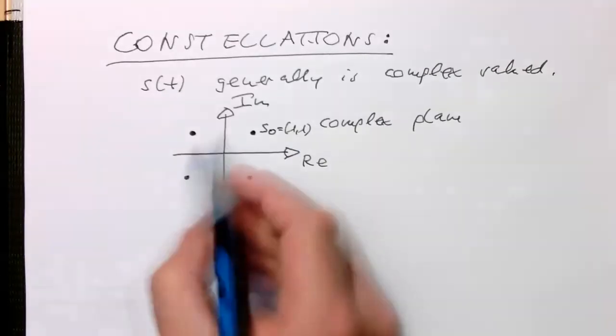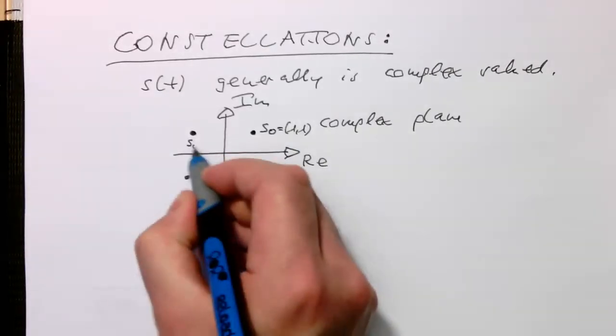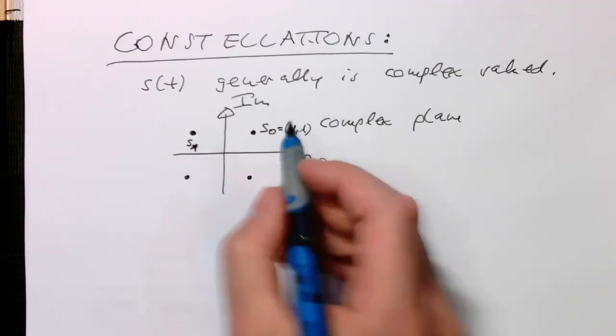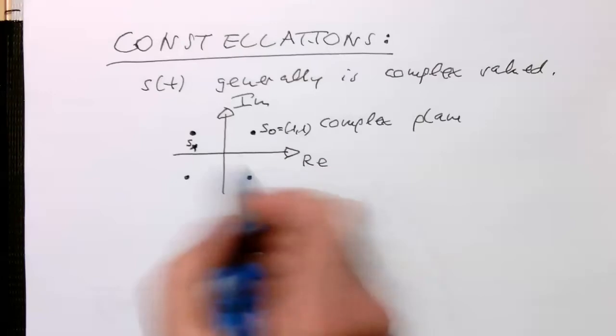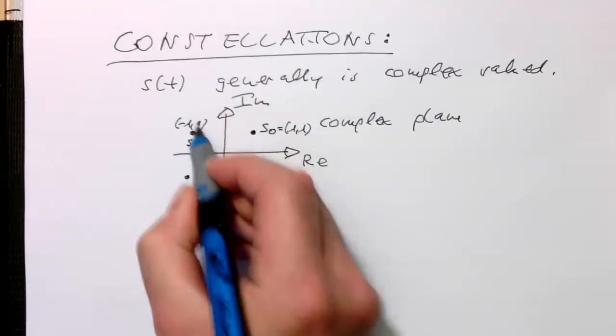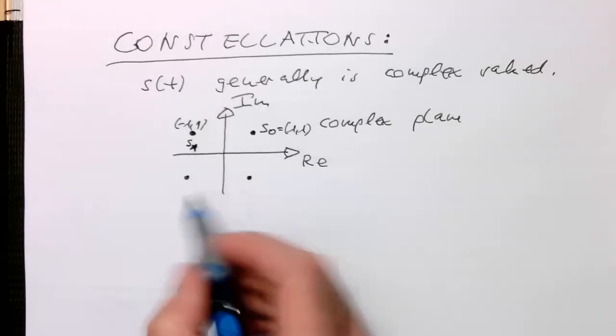And then we've got here, let's say, this is our symbol S1. And the symbol S1 here has a negative real value. So we've got minus 1, 1, for example, and so on.